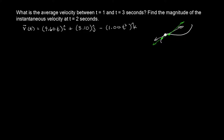Let's start with this problem. The average velocity is nothing more than the difference between the two positions divided by the amount of time. So in this case it would be R evaluated at three seconds minus R evaluated at one second, divided by three minus one. You guys know this from calculus. So let's figure out what R of three is.